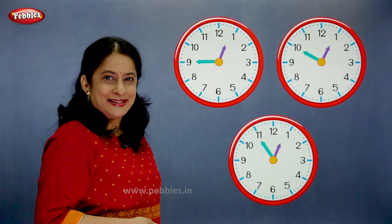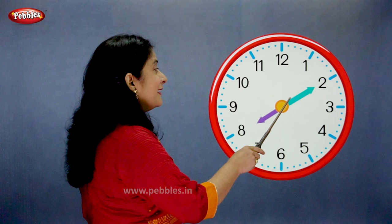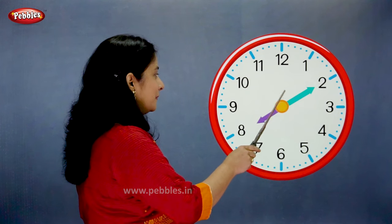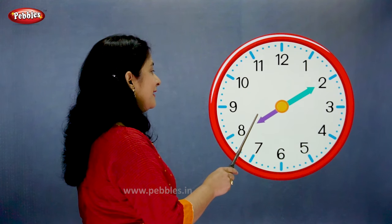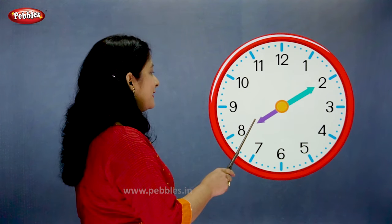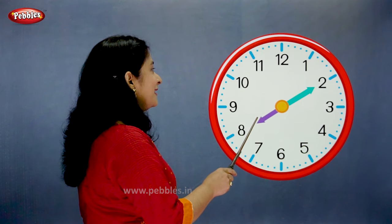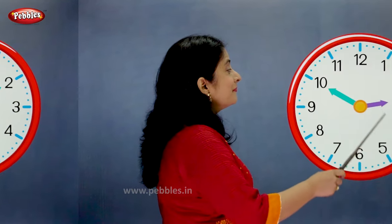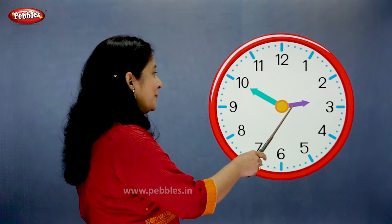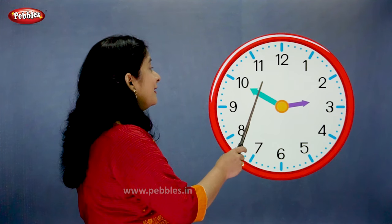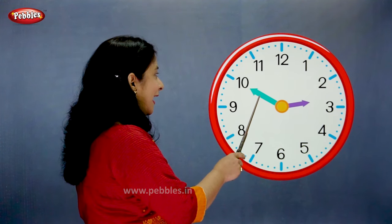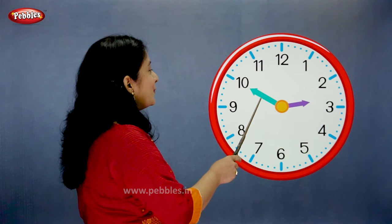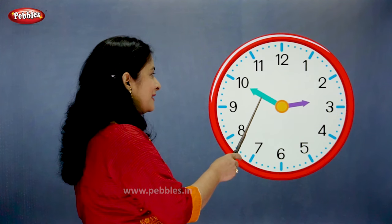Now let's see some examples. The minute hand is on 2. The hour hand is on 8. So we say the time is 10 past 8. The hour hand is moving towards 3. The minute hand is on 10. So we say the time is 10 to 3.